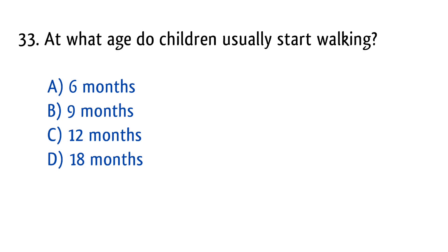Question number 33. At what age do children usually start walking? The right answer is option C: 12 months.